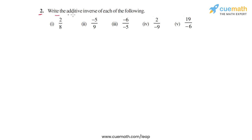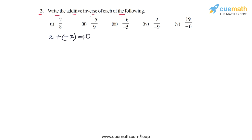In question 2, we have to write the additive inverse of each of these five rational numbers. The additive inverse of any number is another number such that if you add the two numbers, you get 0. So if you take a number x, the additive inverse of x will be minus x, because if you add x and minus x, you will get 0.